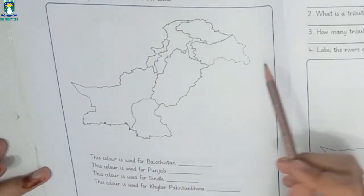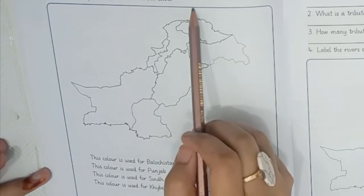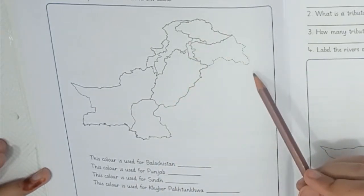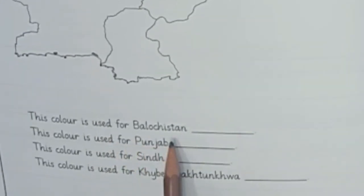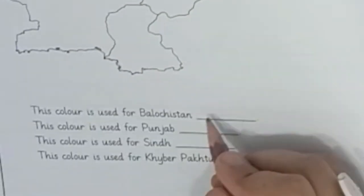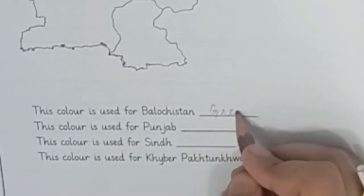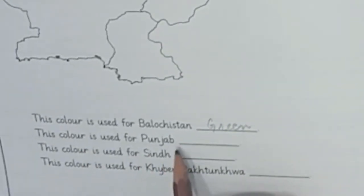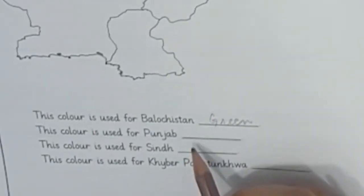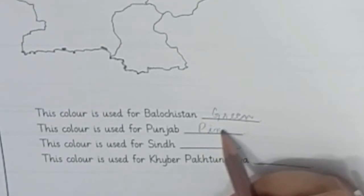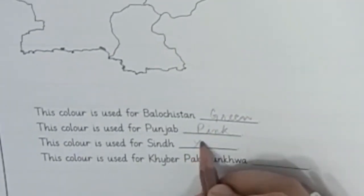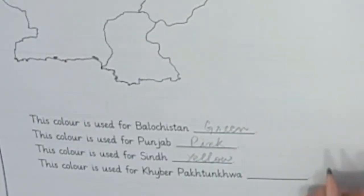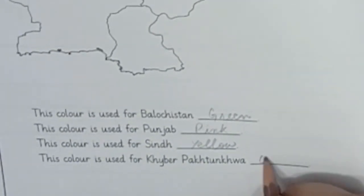Now we will write our workbook page number 2. Here we have a map. Color each province with a different color. This color is used for Balochistan — which color? Green. This color is used for Punjab — which color? Pink. Punjab is pink. You will use yellow and orange for the other provinces.